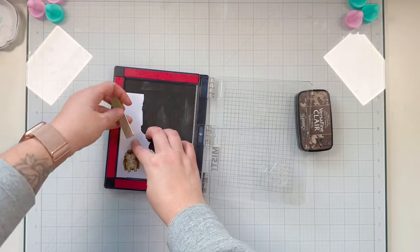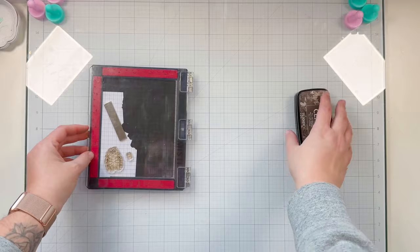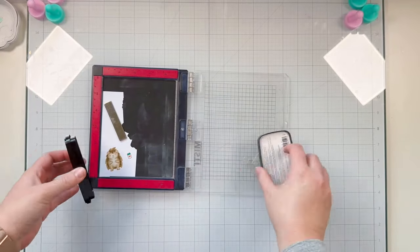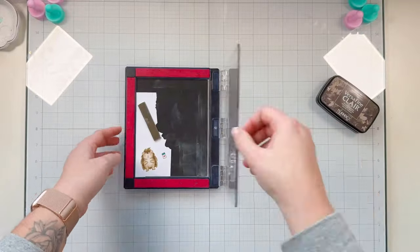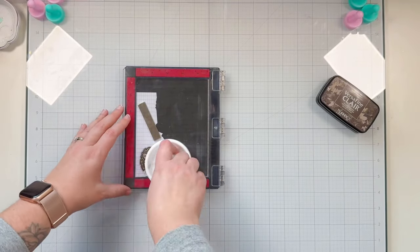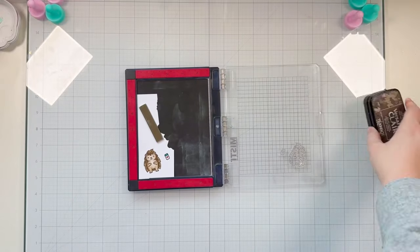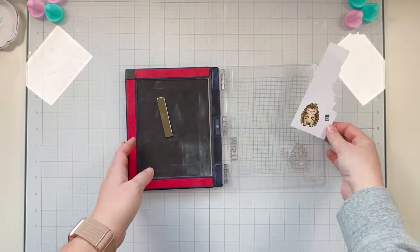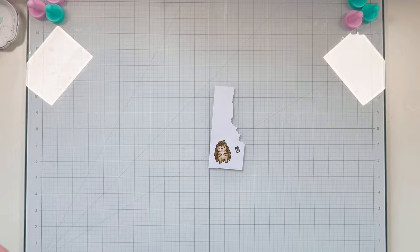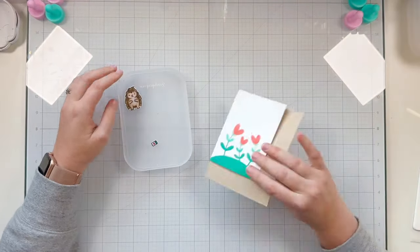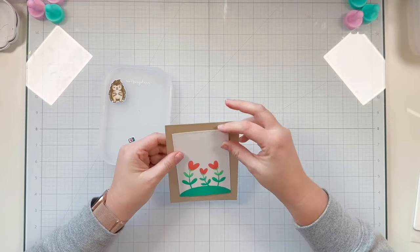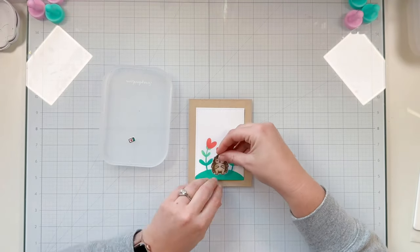I'm putting my images right back into my MISTI making sure it's placed in the same spot as last time and then I'm inking up my stamps with a different colored ink. This is Fallen Leaves Versa Fine Clair ink and I'm stamping on top of what I've already colored. I'll use the coordinating dies from the Lawn Fawn Porcupine For You add-on to cut out my porcupine.